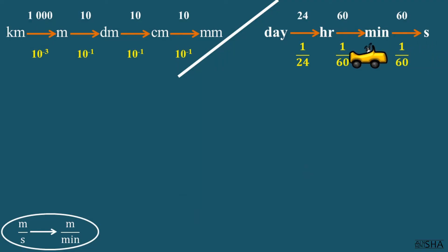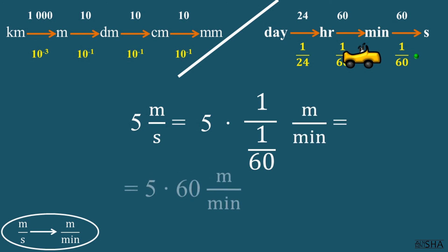5 meters per second are to be converted to meters per minute. Fortunately, there is no need to convert meters here. In the denominator, we convert seconds into minutes. That is 1 over 60. 60 goes straight to the numerator. We calculate and get 300 meters per minute.